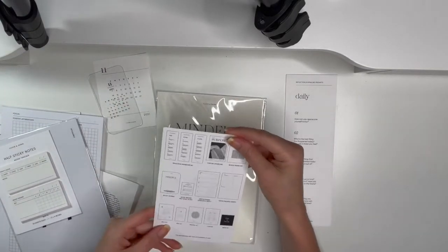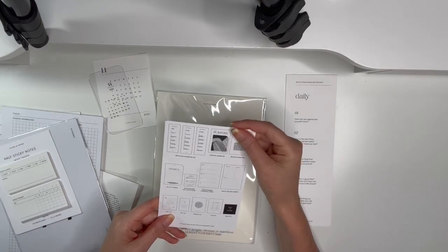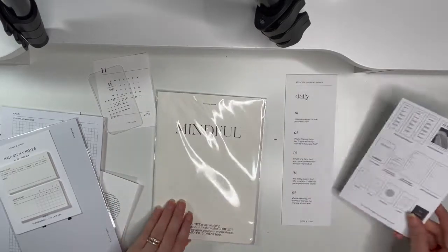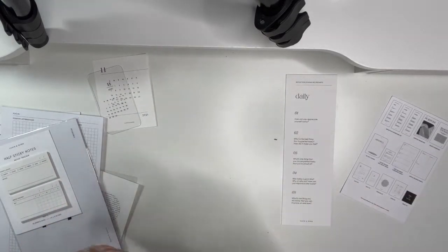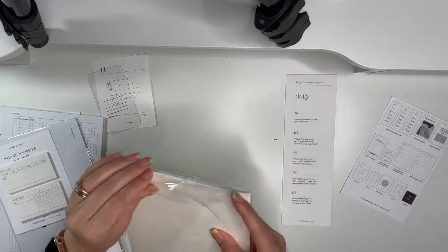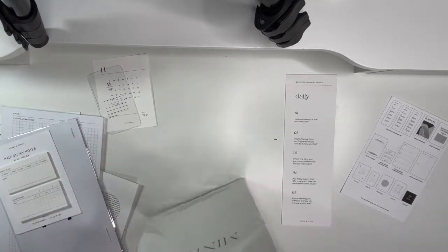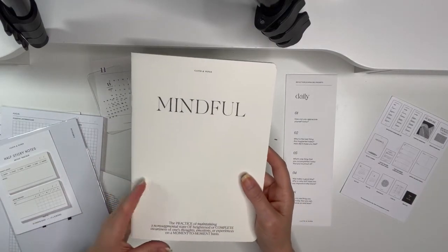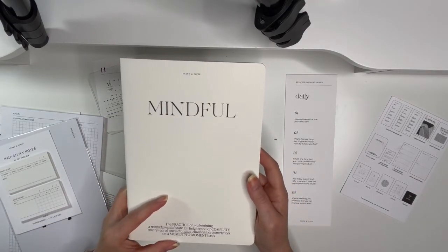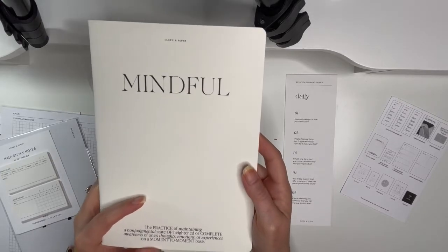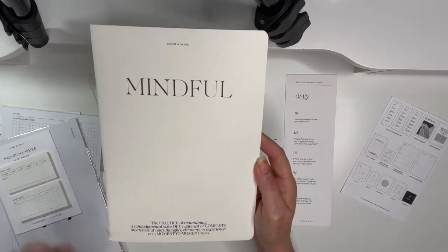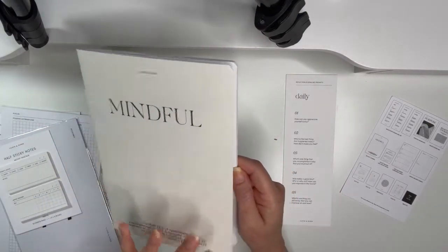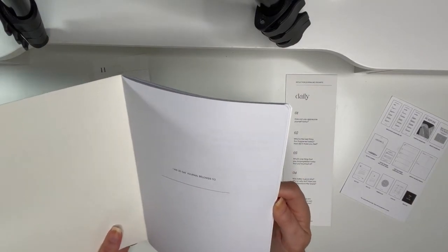And then we have this little booklet and this is the 30-day journal. Okay, this is neat. I'm intrigued, let's see. The practice of maintaining a non-judgmental state of heightened or complete awareness of one's thoughts, emotions, or experiences on a moment to moment basis. That must be the definition for mindful. That's really cool. This 30-day journal belongs to.